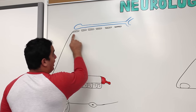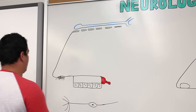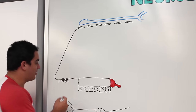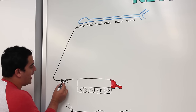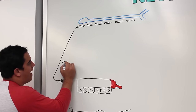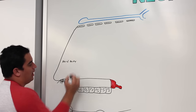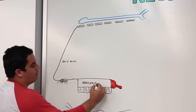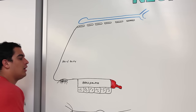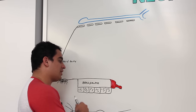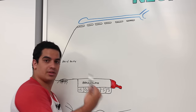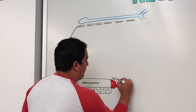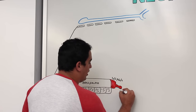Back here you can see the cribriform plate of the ethmoid bone. Let me denote some of these structures. The external nares are here, then the nasal cavity. The hard palate is here, and the teeth — with central incisors, canines, lateral incisors, premolars, and molars. Then you have the soft palate and the uvula.